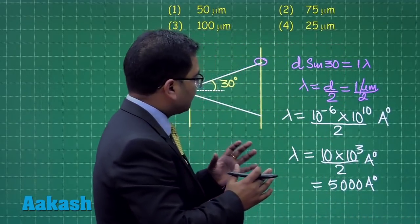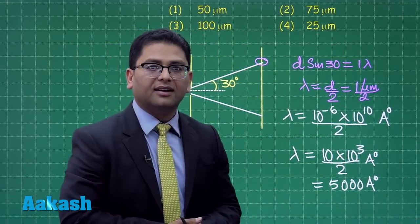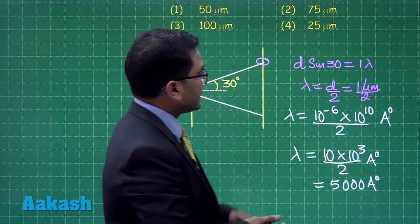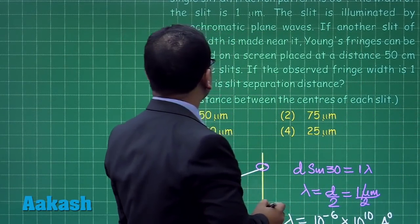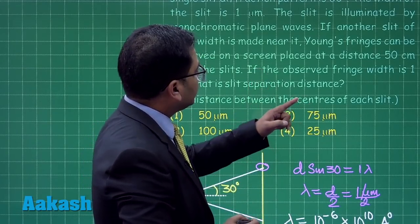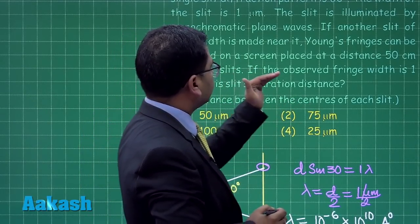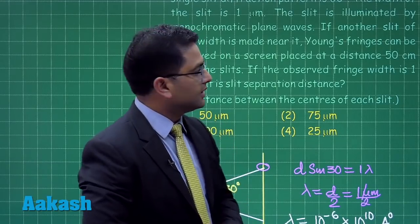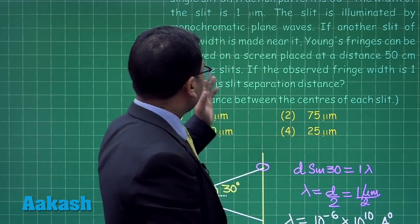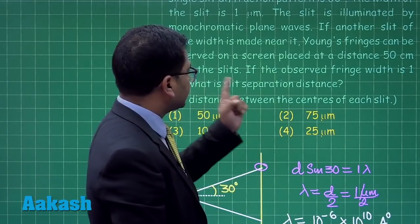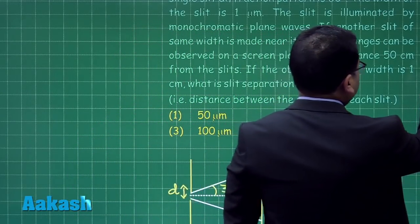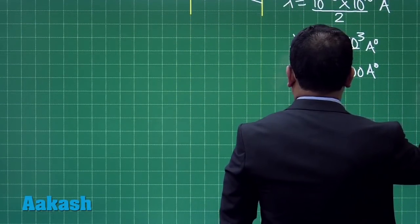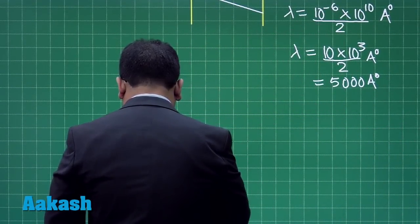Now once you knew the value of lambda from this data, let us see what is the second part of the question. The second part says if another slit of same width is made near it, Young's fringes can be observed on a screen placed at a distance 50 centimeters from the slits.